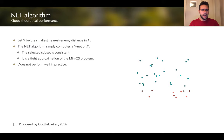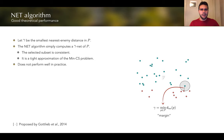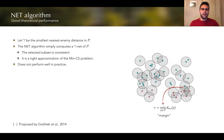We're also going to analyze the size of the selected subset in terms of the optimal solution. In this regard, the NET algorithm becomes really useful: it finds the smallest nearest enemy distance gamma and computes a gamma-net on the training set. This can be proven to be a tight approximation of the min CS problem for doubling spaces, however we've seen that it does not perform well in practice.